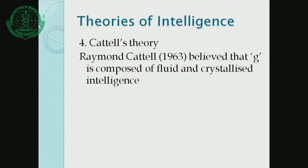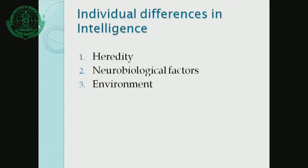The fourth theory is Cattell's Theory. According to Raymond Cattell in 1963, there are two types: fluid intelligence and crystallized intelligence. Fluid intelligence is based on the ability to see relationships between things and to think logically and abstractly — it refers to our inherited ability to think and reason. Crystallized intelligence is the acquired knowledge and skills. Fluid intelligence declines with age, but crystallized intelligence does not decline with age.